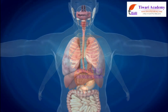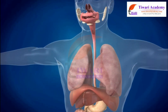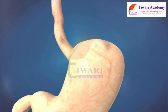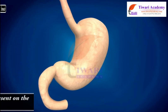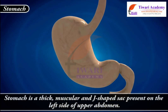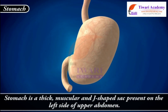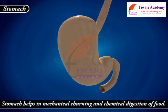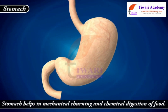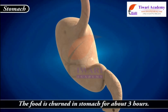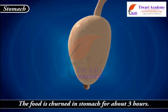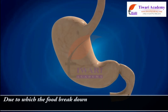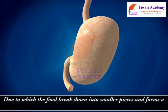From the esophagus, food is pushed down towards the stomach. Stomach is a thick, muscular and J-shaped sac present on the left side of the upper abdomen. Stomach helps in mechanical churning and chemical digestion of food. The food is churned in the stomach for about 3 hours, due to which the food breaks down into smaller pieces and forms a semi-solid paste.